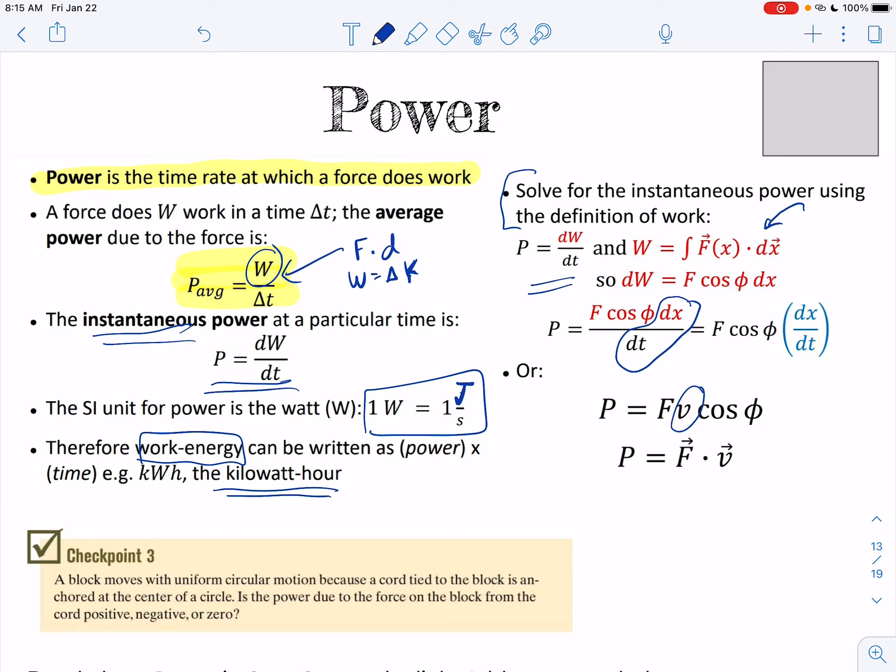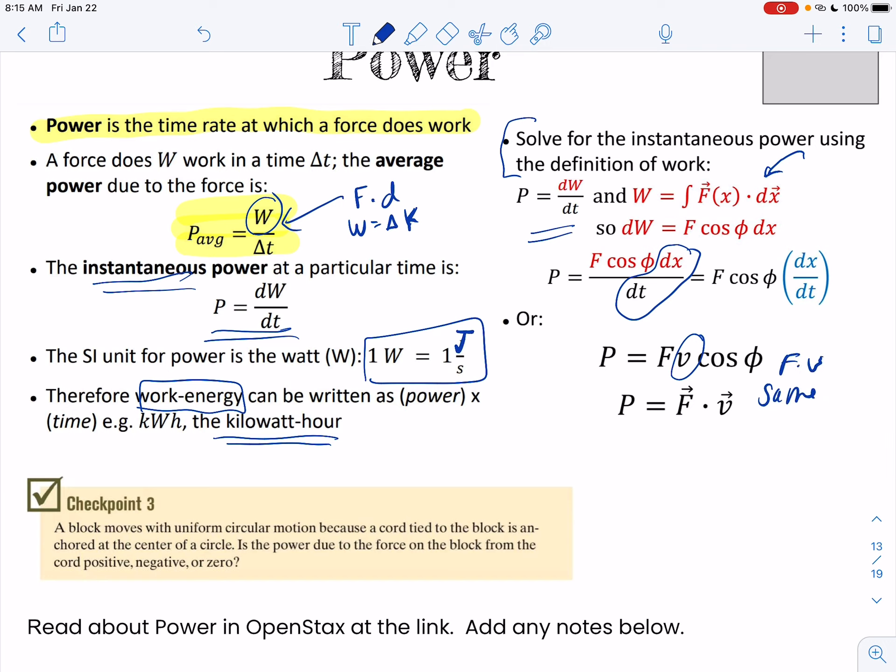This cosine angle term just means that they have to be, force and v have to be in the same direction. Just like work and all the other things. That's why it's technically a dot product. So really, you're going to use this force times velocity thing if it asks for instantaneous power. It seems a little bit confusing, but once you see the examples, I don't think it's so bad.